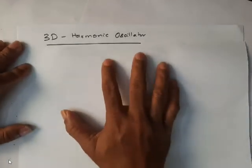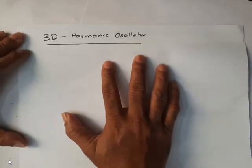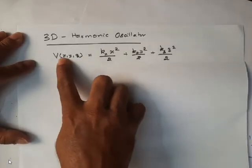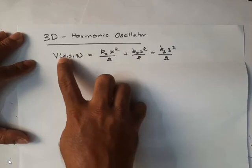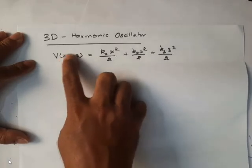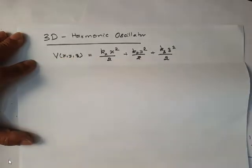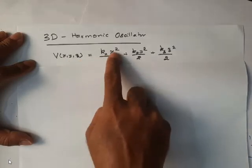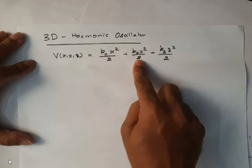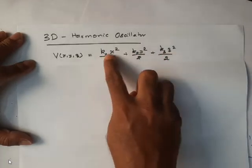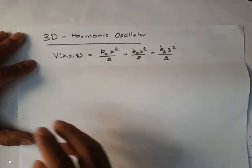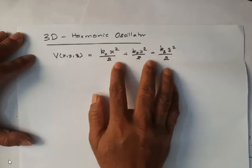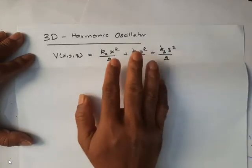In three-dimensional harmonic oscillator, what is meant by that? If potential energy of a harmonic oscillator depends on the coordinates x, y, z, we call that oscillator as three-dimensional oscillator. For a three-dimensional oscillator, the potential energy can be given as kx·x²/2 + ky·y²/2 + kz·z²/2, where kx, ky, and kz are force constant components in the x, y, z axes.